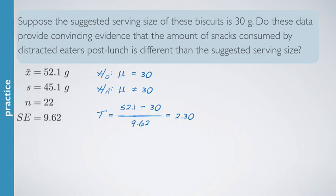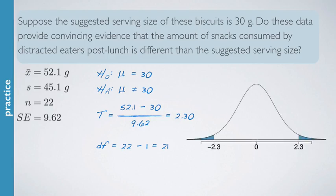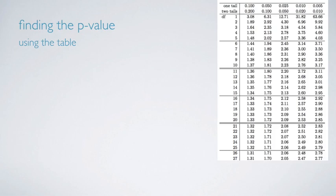The degrees of freedom are n minus 1, which is 22 minus 1, giving us 21. The next step is to find the p-value, but first always draw a picture. The calculated test statistic is 2.30, and since this is a two-sided test, we shade both tail areas — above 2.30 on the positive side and below negative 2.30 on the negative side. We want to find those two blue shaded areas, and there are a variety of methods we can use.